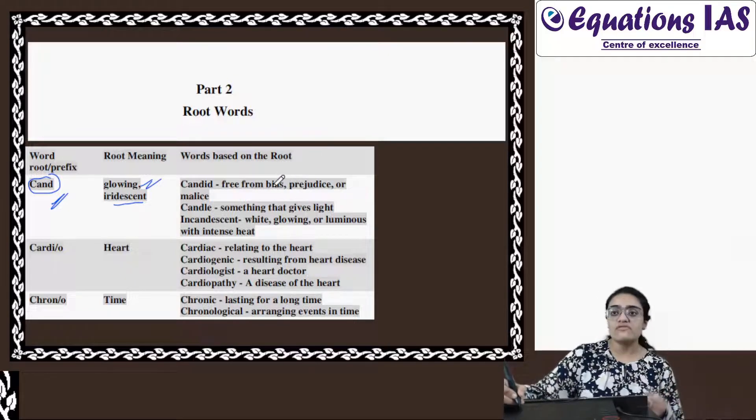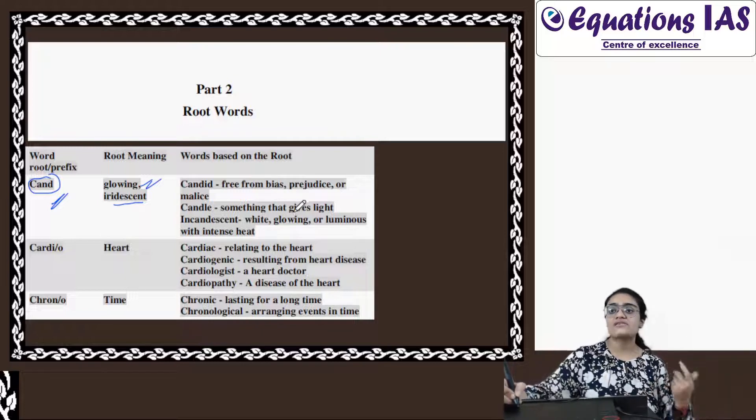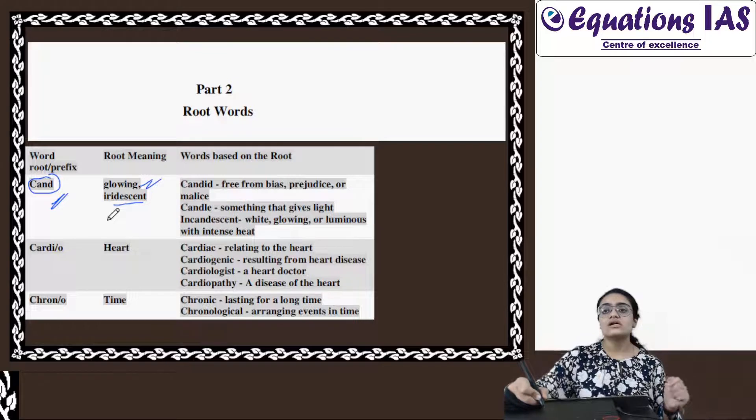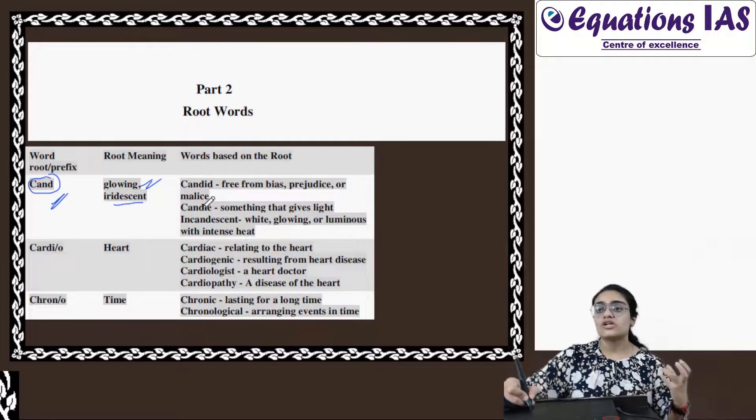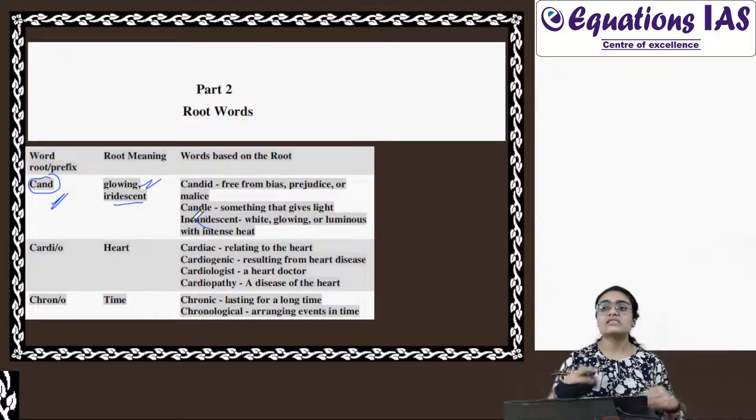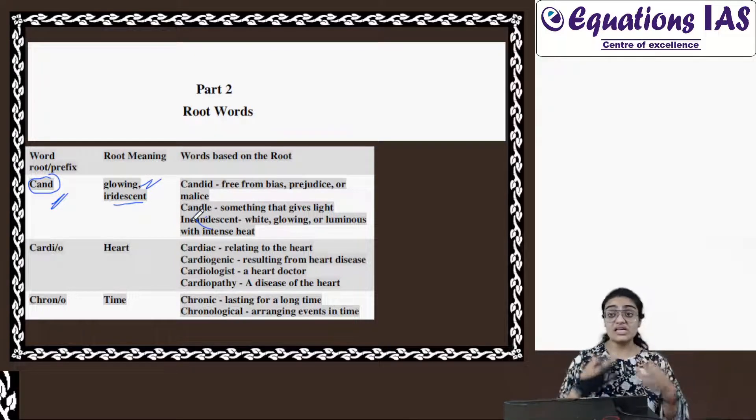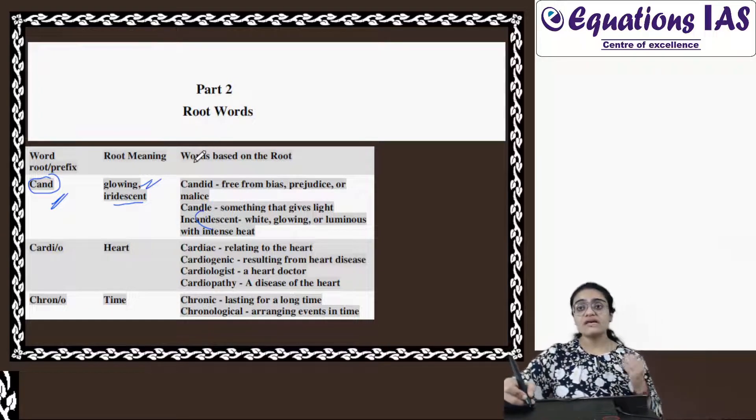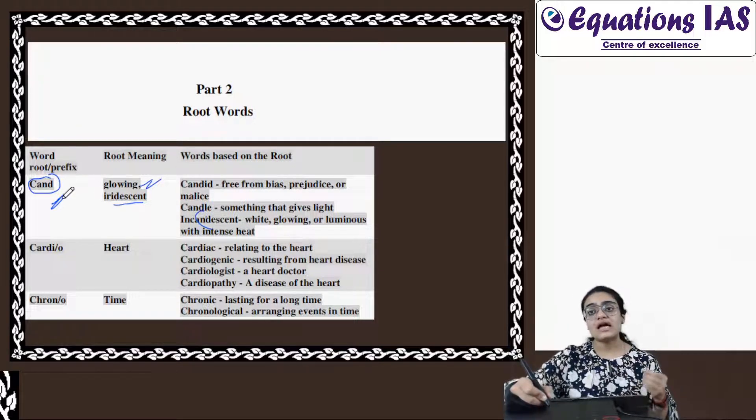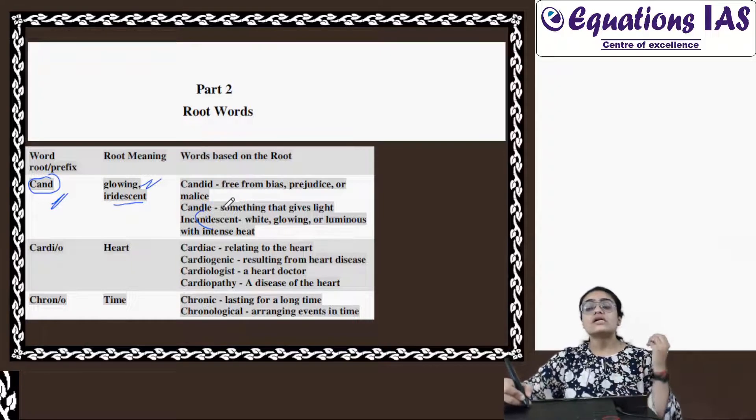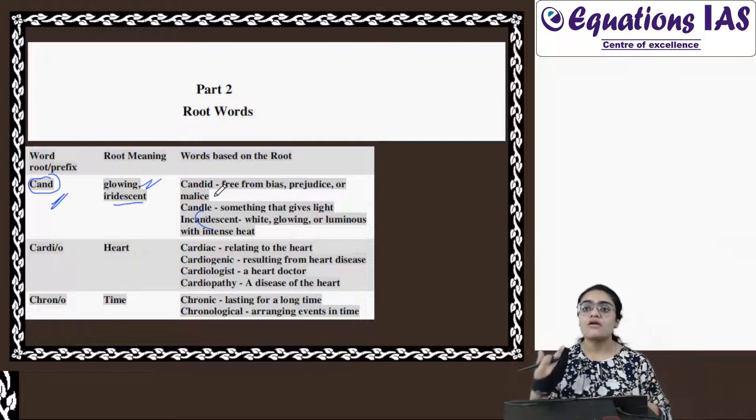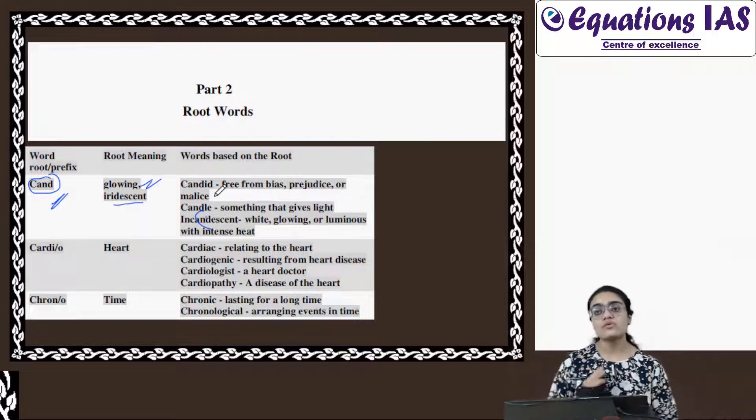Candle. Candle is obviously, we all know what candle is - something that gives us light. Incandescent. As I told you, the word Cand is related to light. So incandescent means something that gives light, something that gives heat like sun is incandescent. So we should keep in mind that the word Cand is always related to either free from everything, something which is unplanned, or maybe iridescent, something related to light.